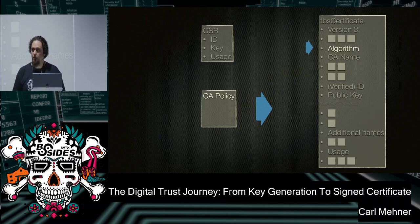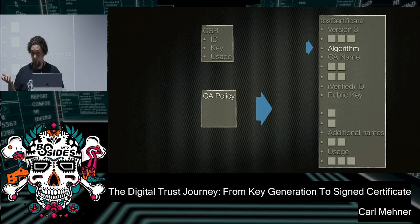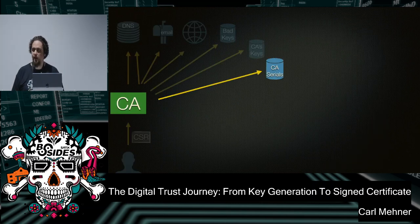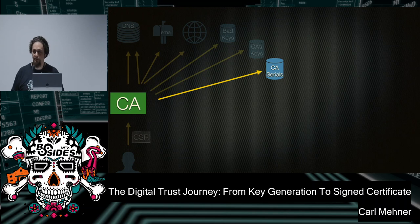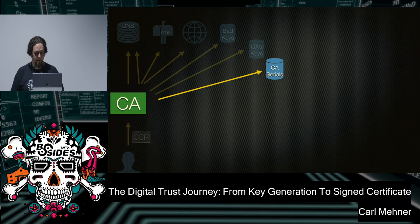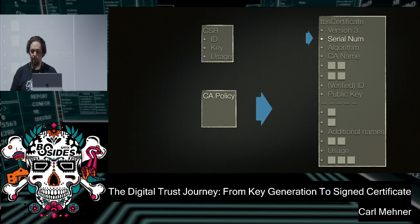The next step is the serial number. Each certificate has an individually unique serial number that has to be unique for a given CA. The serial number is used to revoke the certificate — so if you have two certs with the same serial, you revoke one and it ends up revoking both. The serial number has to have at least 64 bits of randomness in it. A couple CAs have gotten in trouble by having only 63 bits of randomness and then had to go revoke all the certs that didn't meet those requirements.